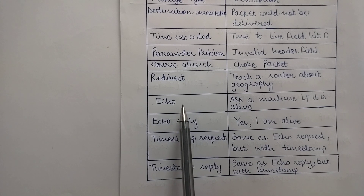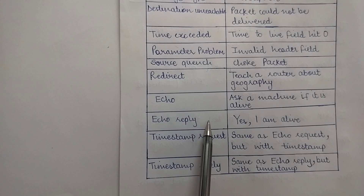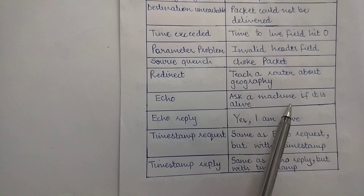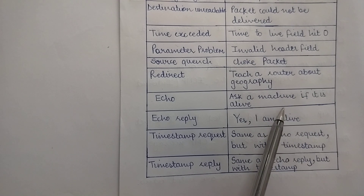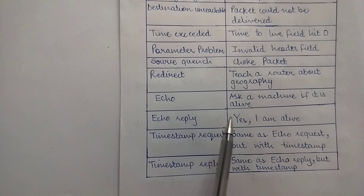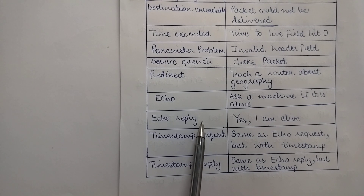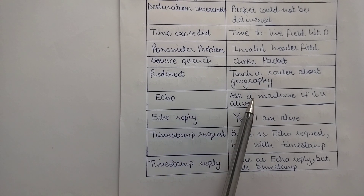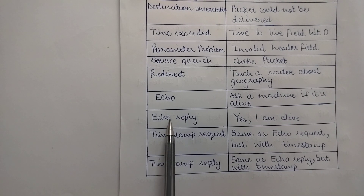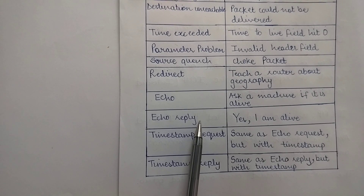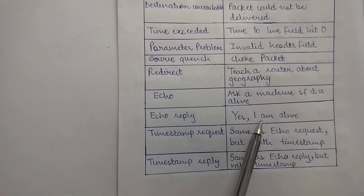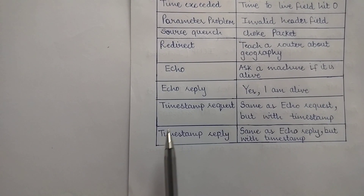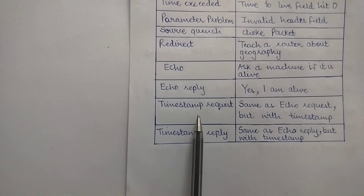The next messages are 'Echo' and 'Echo Reply.' These two messages are used to see if a given destination is reachable and alive. An echo message is sent to a machine asking, 'Are you alive and reachable?' Upon receiving the echo message, the destination is expected to send an echo reply back, confirming that it is alive and reachable.